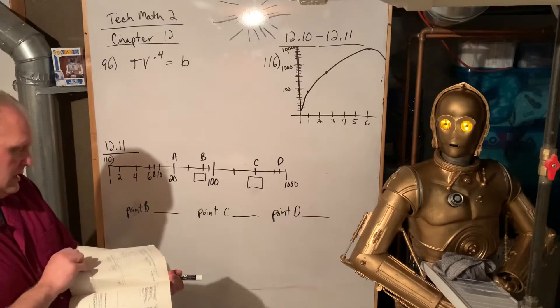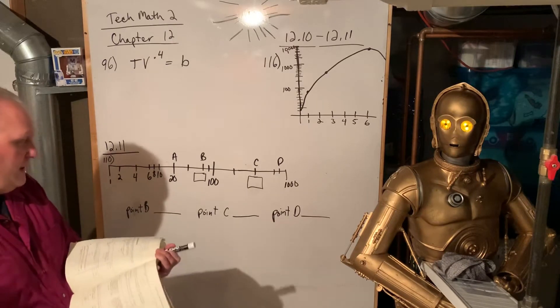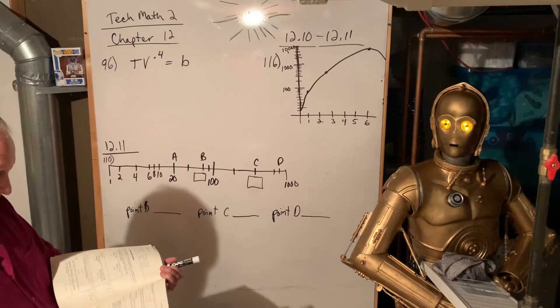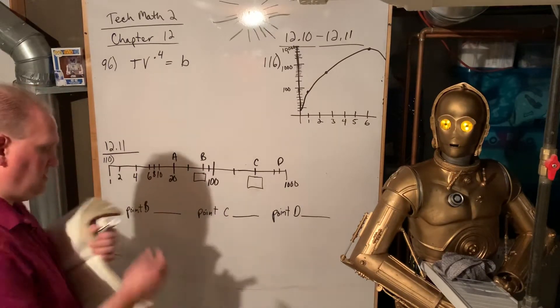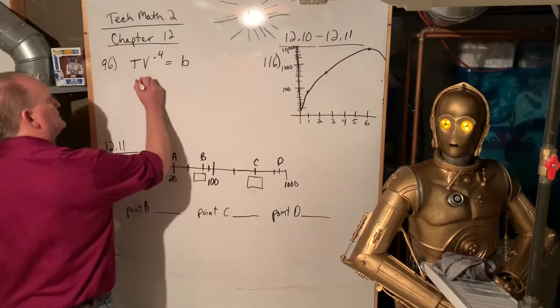So 96, this says find t when v is 200. So this is 200 to the 0.4 power.